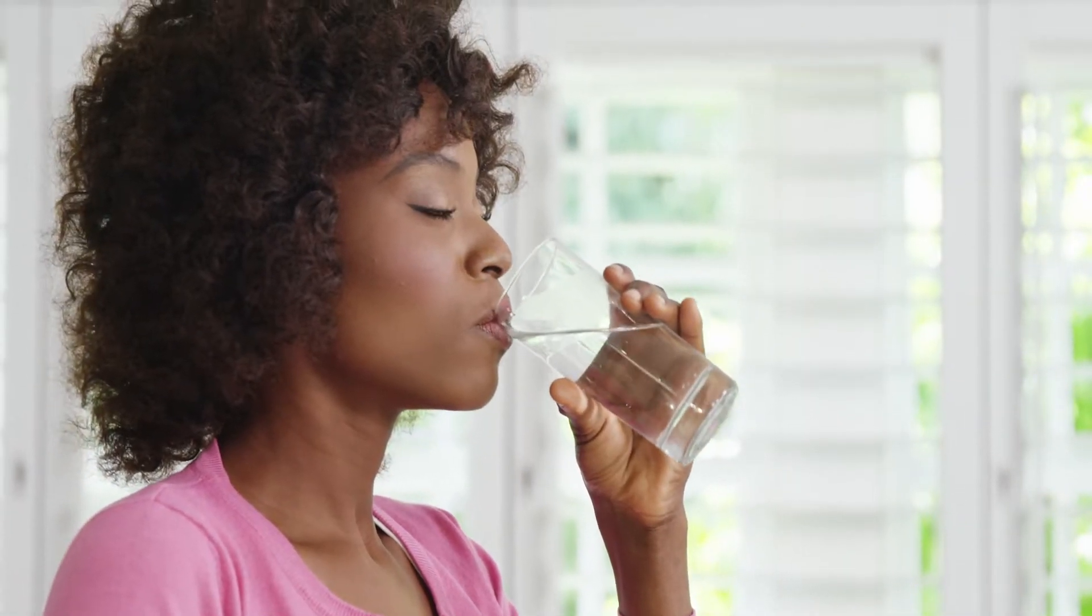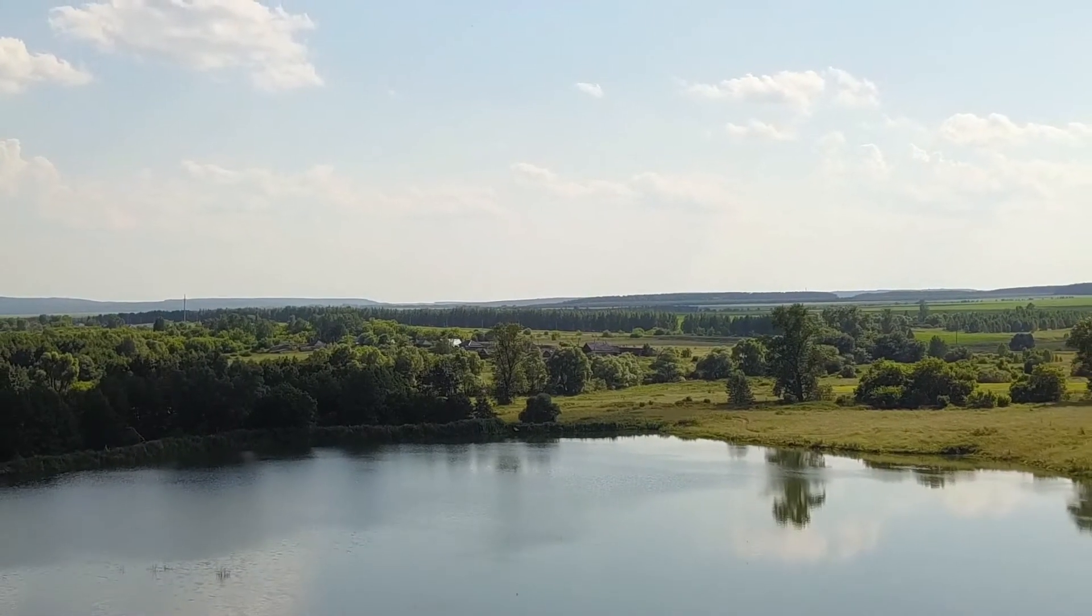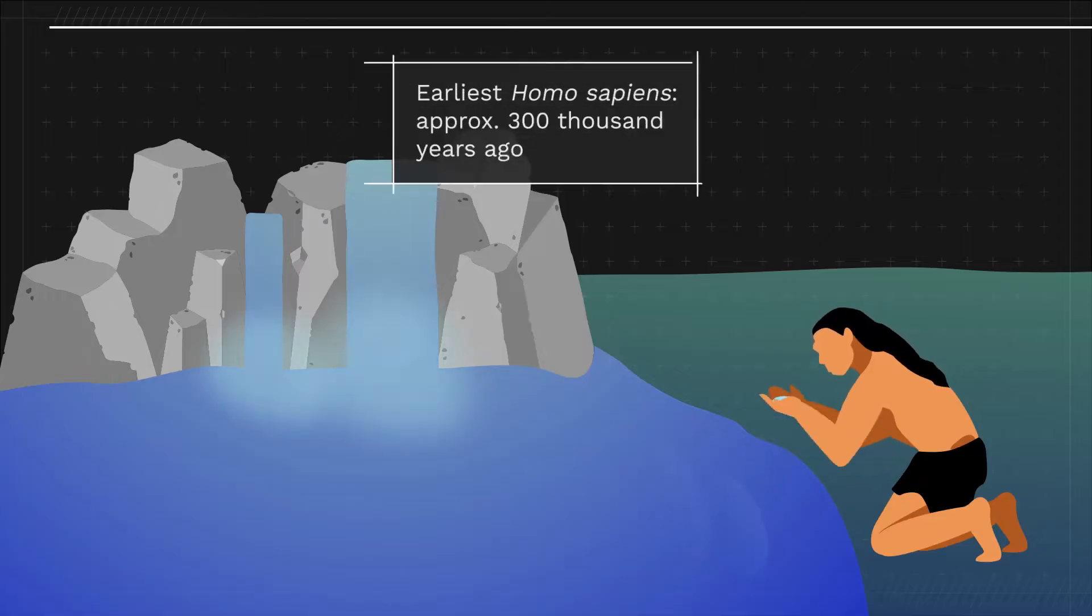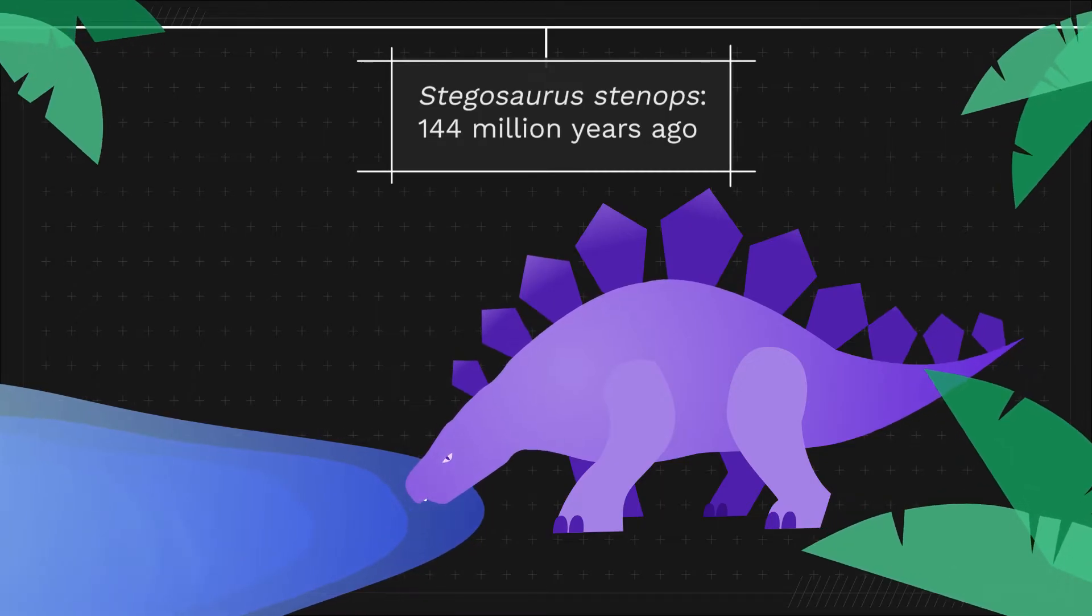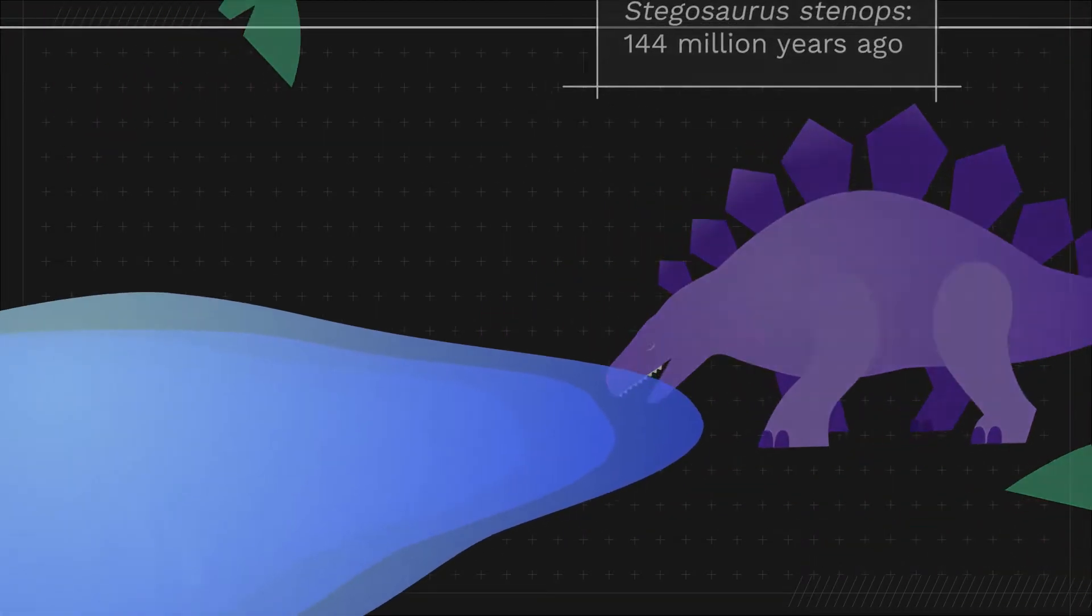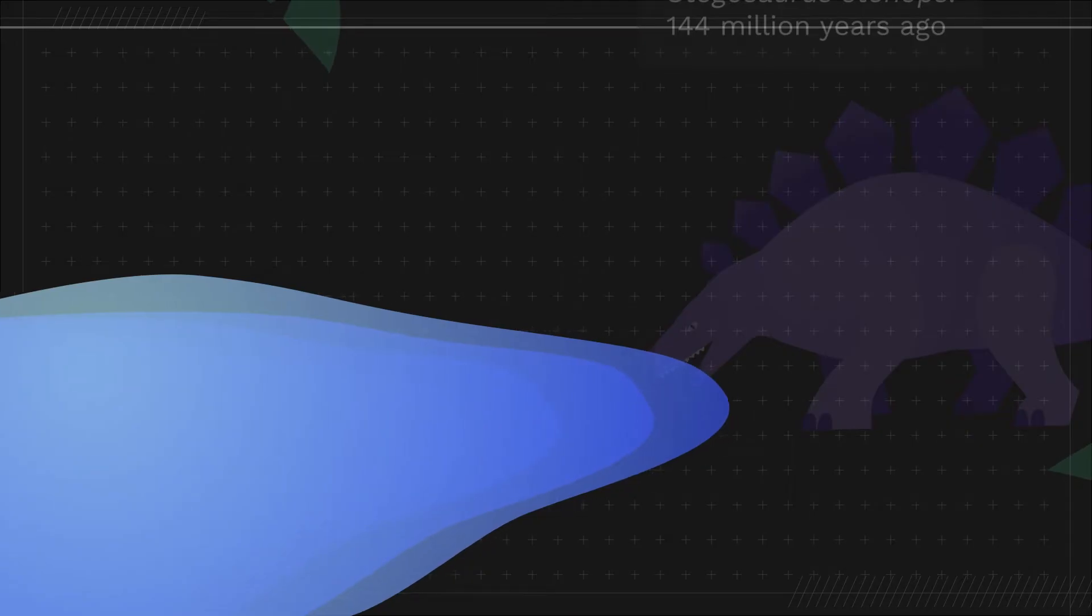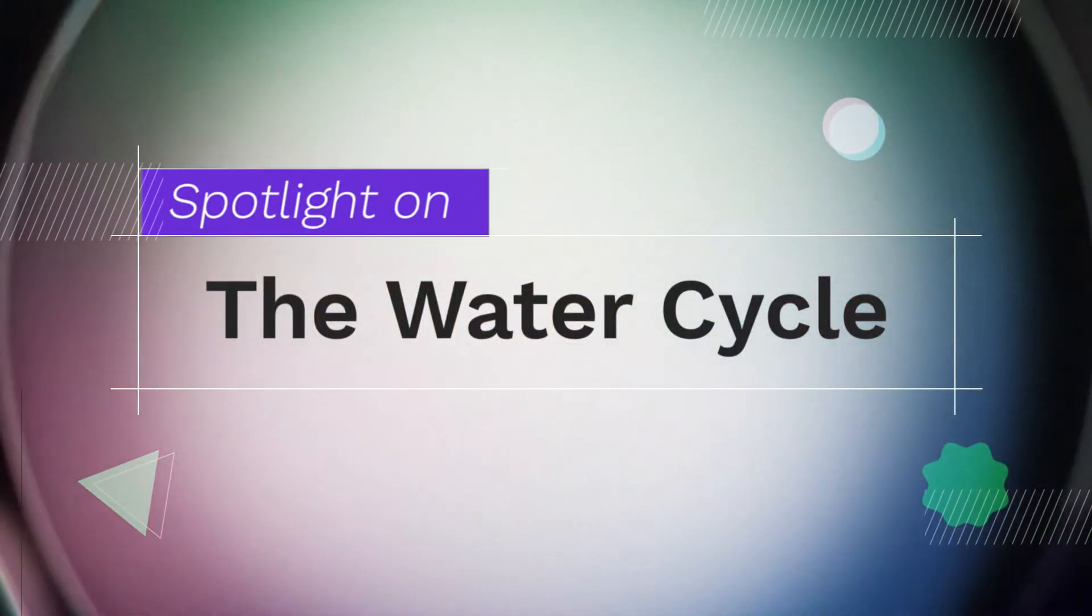The water we drink is old. It's been here on Earth for a long time. In fact, it's the same water that early humans drank, and also the same water the dinosaurs drank. The same water. And it's all thanks to the water cycle. But what is the water cycle? It's time to shine a spotlight on the water cycle.